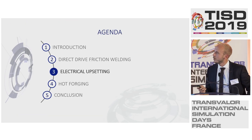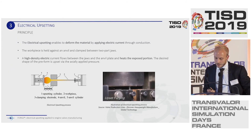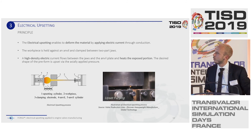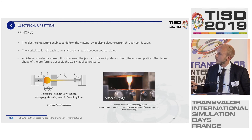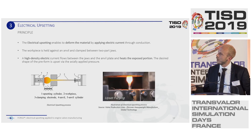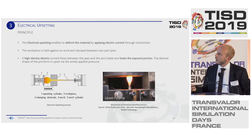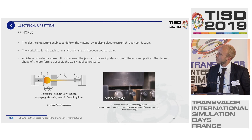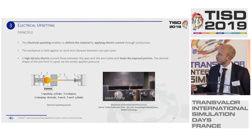The second operation is the electrical upsetting. This process deforms material by applying electric current through conduction. The rod piece is held against the anvil and clamped between two jaw parts. A high-density electric current flows between the jaws and the anvil plate, heating the exposed portion. The desired shape of the preform is then upset via axially applied pressure. You can see the anvil, the two jaw parts, and the bottom anvil moving up to give the shape of the preform.